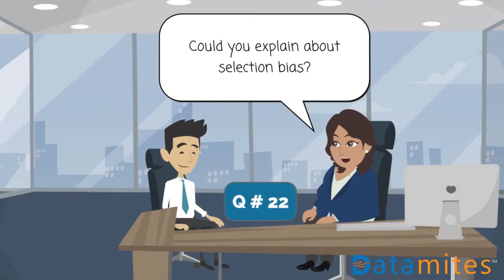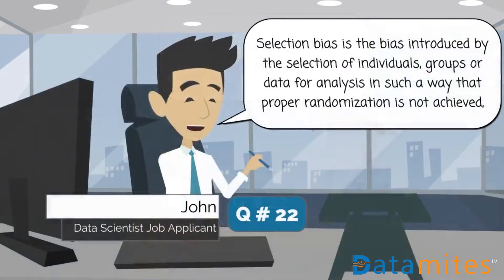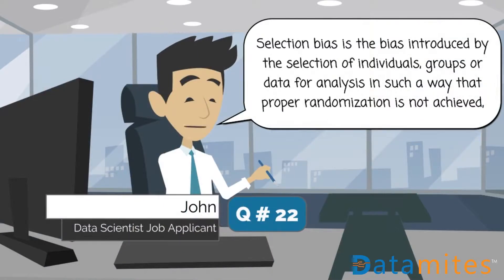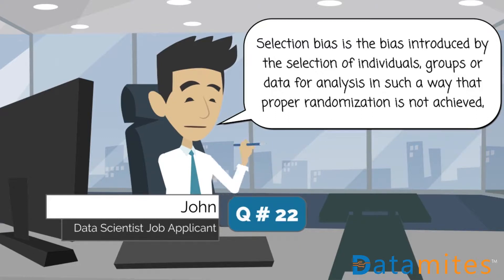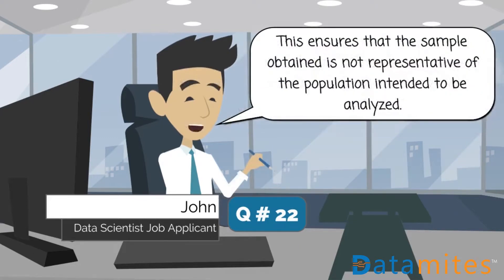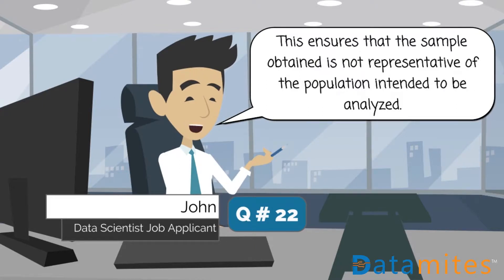Could you explain about selection bias? Selection bias is the bias introduced by the selection of individuals, groups, or data for analysis in such a way that proper randomization is not achieved. This ensures that the sample obtained is not representative of the population intended to be analyzed.